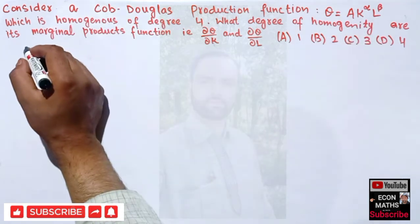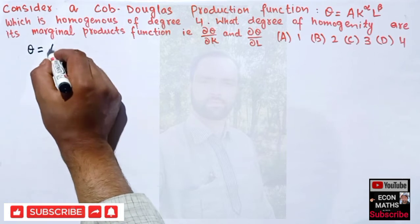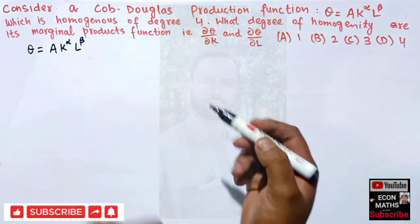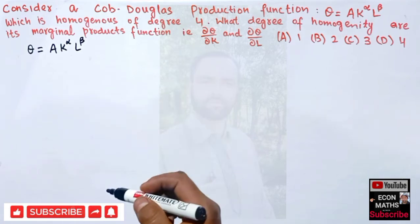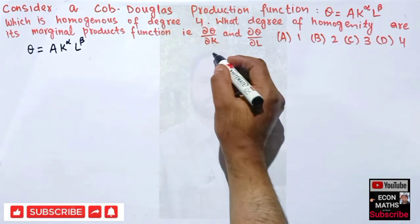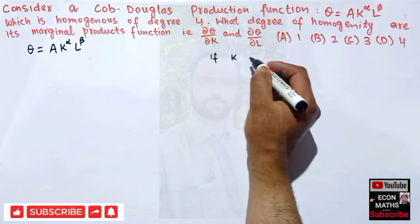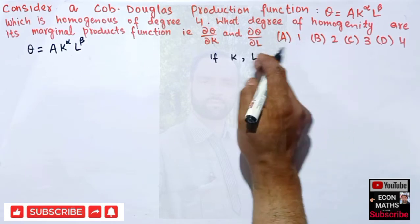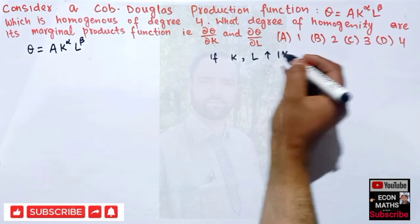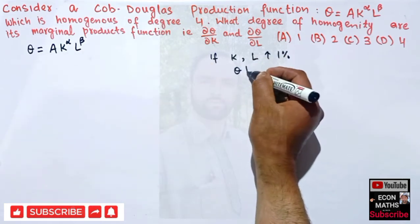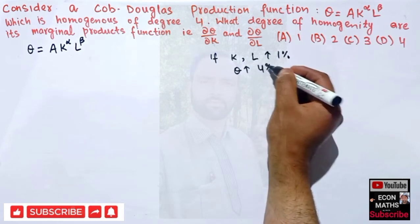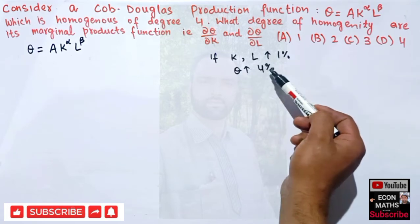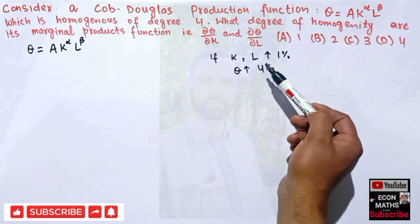We will write the given function: Q = a · K^α · L^β. It has been told it is homogeneous of degree 4. By homogeneity of degree 4, if capital and labor are increased by 1 percent, quantity produced gets increased by 4 percent. So if capital and labor are increased by 1 percent, quantity produced will increase by 4 percent.